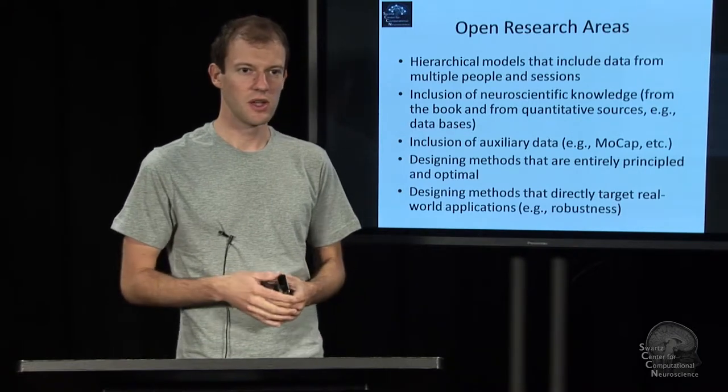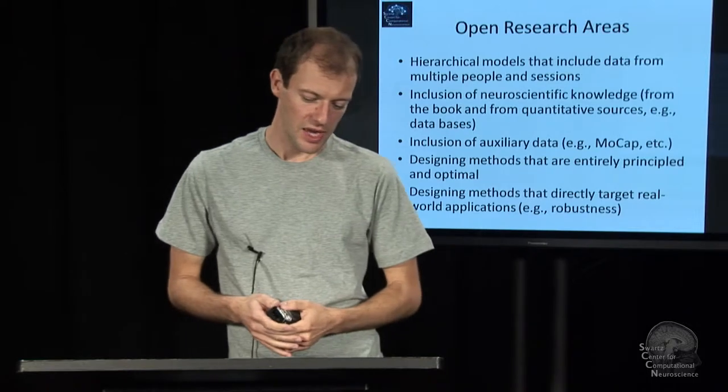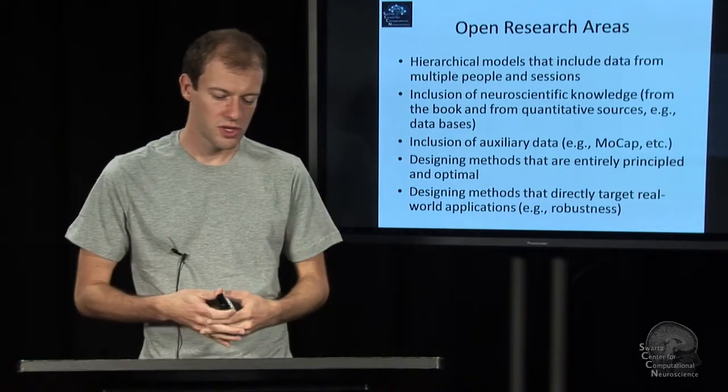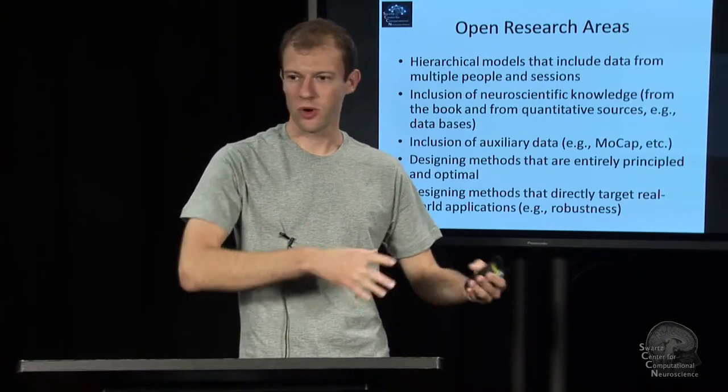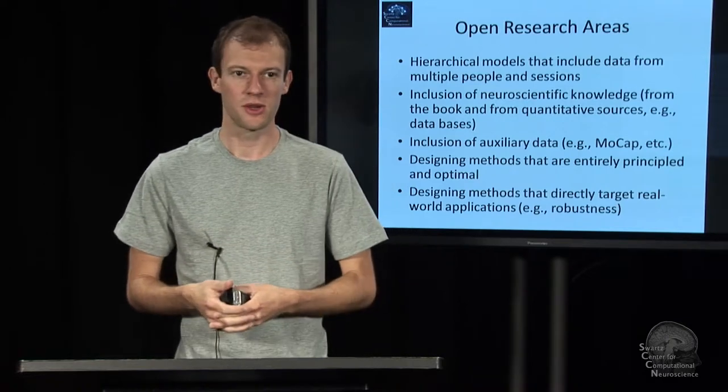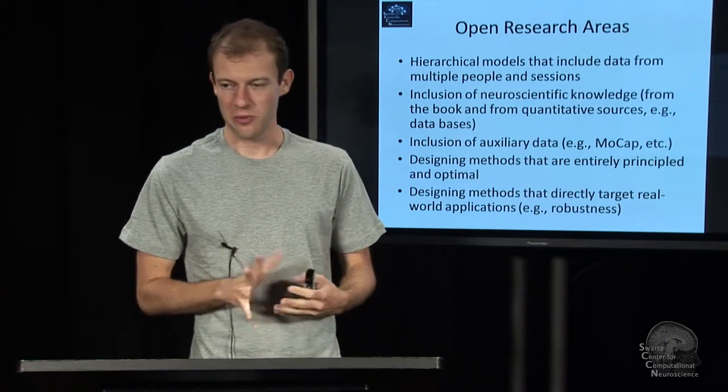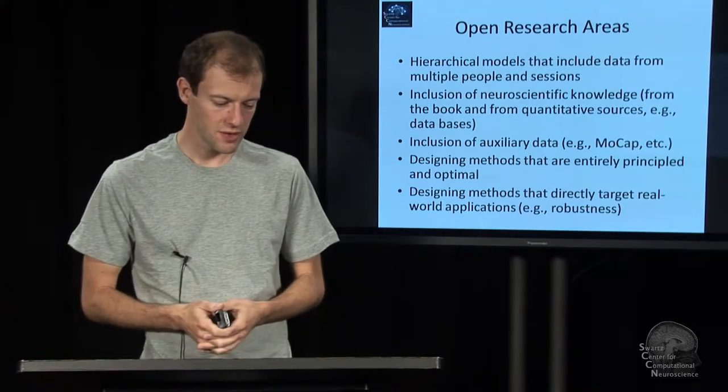With precisely resolved representations, we can afford to have more complex models such as effective connectivity if we have enough subjects to fit it. The other area is to include more neuroscientific prior knowledge - that can be from the book, brain atlases, or fundamental prior knowledge that is known in the literature, or it can come from databases like functional and anatomical atlases.